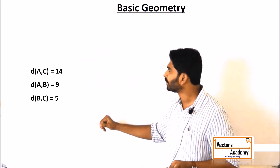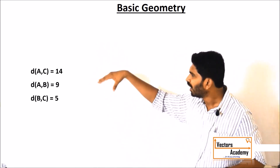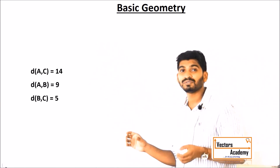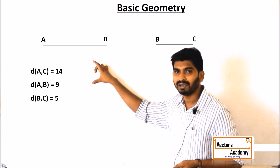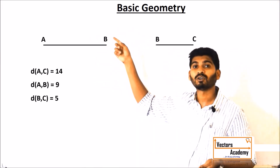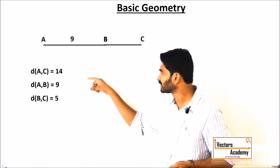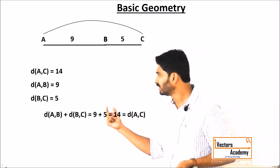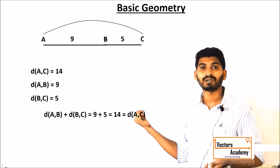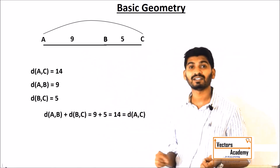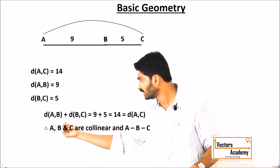Consider these three segments: segment AC, segment AB, and segment BC. The measurements are given. Now we identify which are the two smaller segments — they are AB and BC. Remember B is the common point, so adding both segments: 9 plus 5 equals 14. Now is this measurement equal to the larger segment? Yes, it is equal to the larger segment. So I can say points A, B, and C lie in a straight line — they are collinear, and point B lies between A and C.